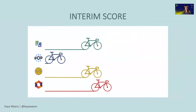So then we go to our next interim score. The green bike, Code With Me, is now second together with CodeTogether the yellow one, and the pink one, Git Live, is first. And Pop is still quite far behind.